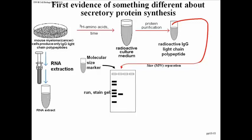In a separate experiment, we take cells from this culture, discard the medium, spin down the cells in a centrifuge tube, grind them up in a tissue grinder, and perform an RNA purification. At the end of this process you have a test tube containing pure RNA from these cells, which includes mRNA for the IgG light chain.